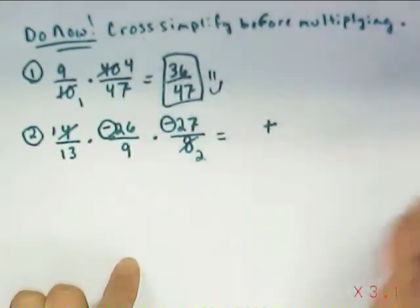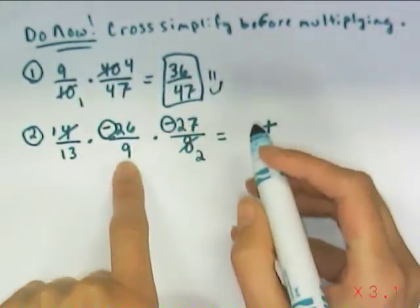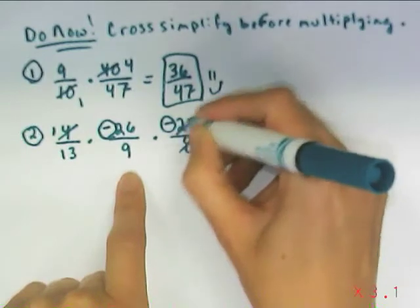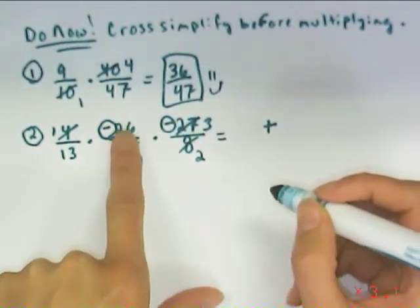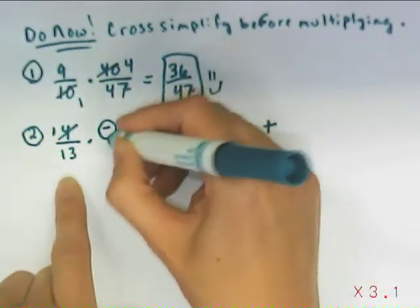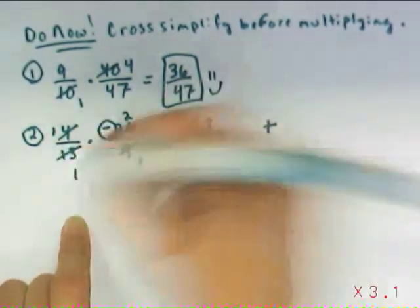I see a 4 on the top and an 8 on the bottom. 4, 8 is 1 half. I see a 27 on the top and a 9 on the bottom. 27 divided by a 9 is 3 over 1. 26 on the top, 13 on the bottom, makes that 2 over 1.